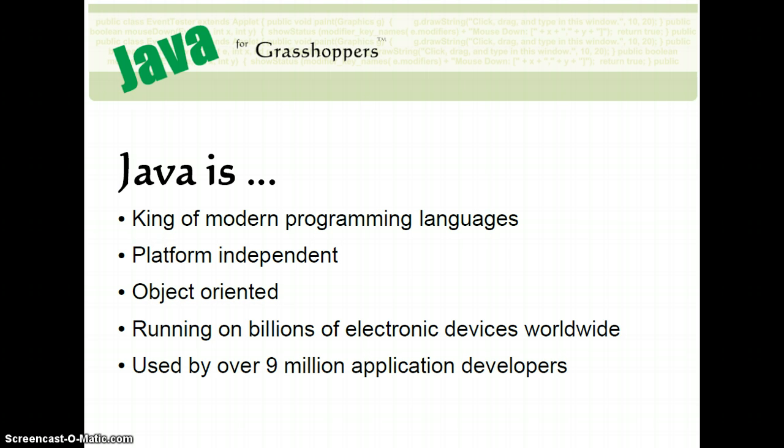There are over 9 million application developers worldwide that are using Java. This is exciting for us. This is good news for us because it means that first of all, there's a lot of jobs, a lot of work out there available to Java developers. But also, and perhaps more importantly, it means that there's a lot of support. If we run into any issues with our code, or there's something we don't quite understand, or we need help with something, there's a whole lot of other developers out there who can help us along and help us work out the kinks in our applications.